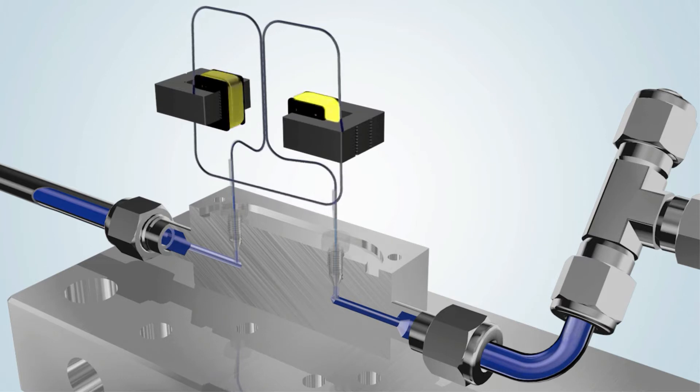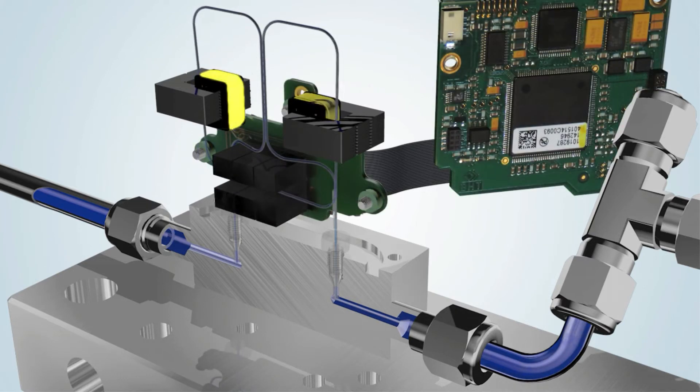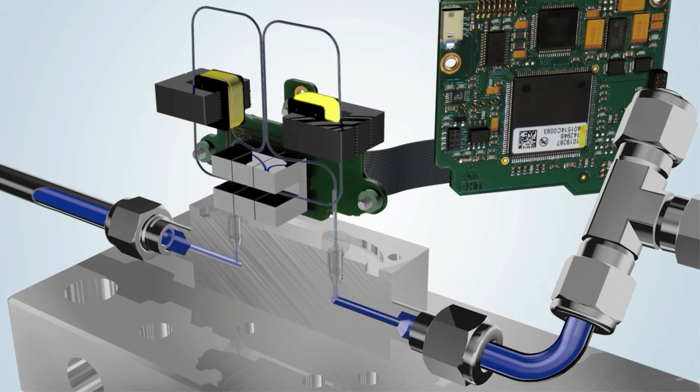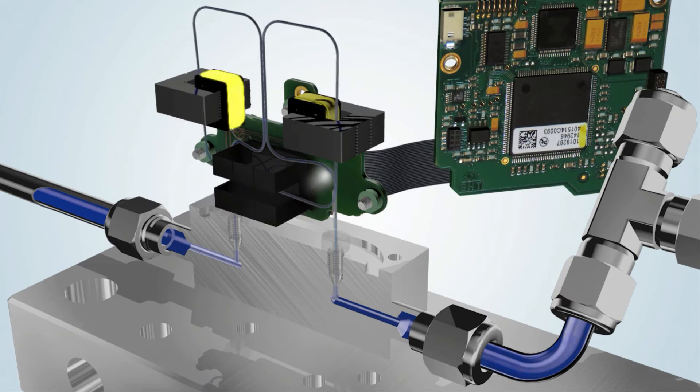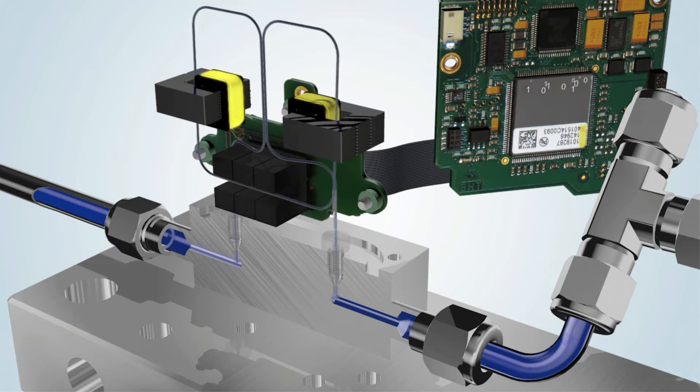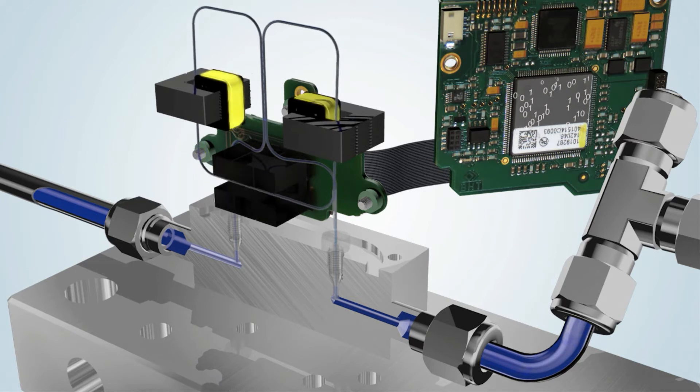A signal is then transmitted to the digital electronics, which translate the measured vibrational value into a mass flow value and compare this to the set point from a PC, PLC, or analog port.